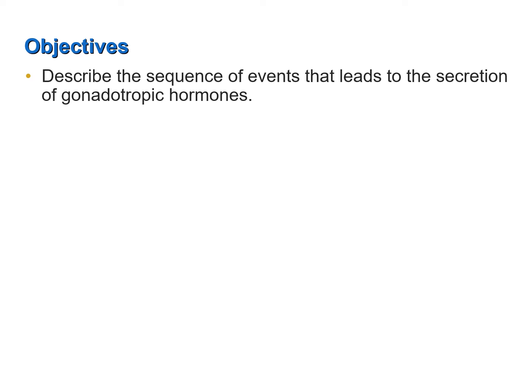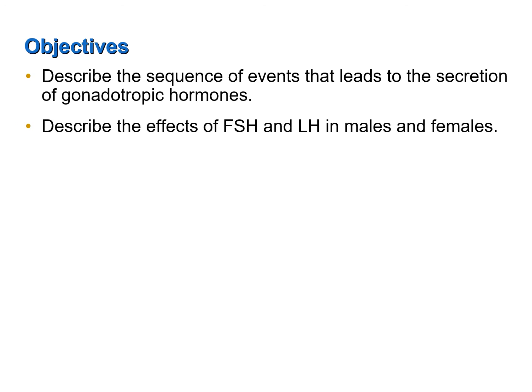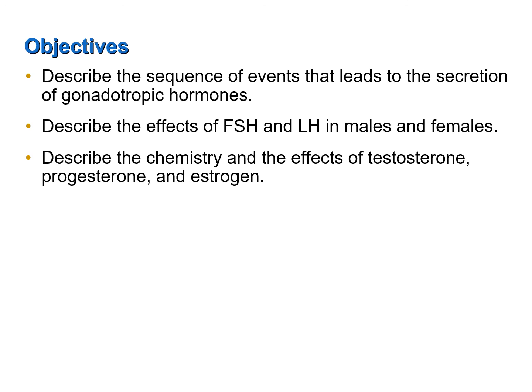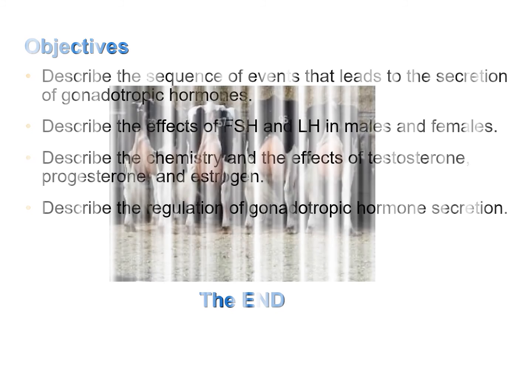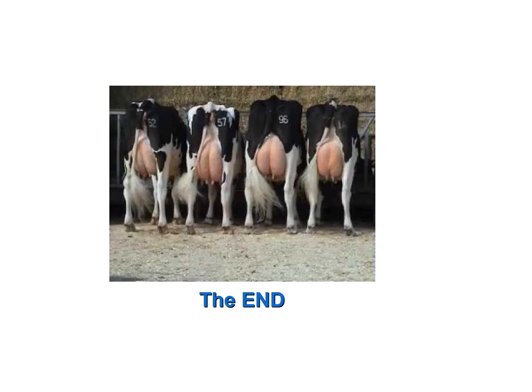To review the objectives of this screencast: describe the sequence of events that leads to the secretion of gonadotropic hormones; describe the effects of luteinizing hormone and follicle stimulating hormone in males and females; describe the chemistry and the effects of testosterone, progesterone, and estrogen; and describe the regulation of gonadotropic hormone secretion. We are now at the end of this module.